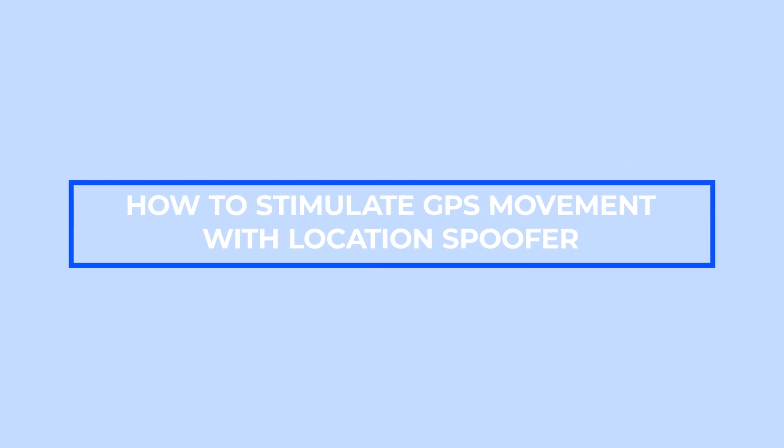Hi guys, welcome to another video. In today's video, we're going to discuss how to simulate GPS movement with a location spoofer. To achieve a more authentic result, it is advisable to incorporate a simulation process to counteract the usage of a location spoofer that alters the location of a user's smartphone. Dr.Fone Virtual Location offers an excellent solution by detailing how to mimic a GPS path and simulate movement along it.